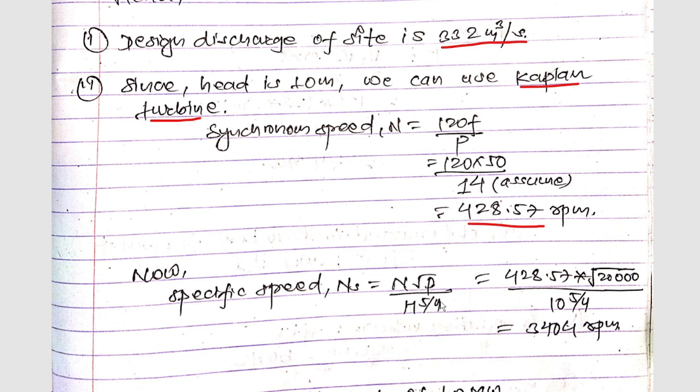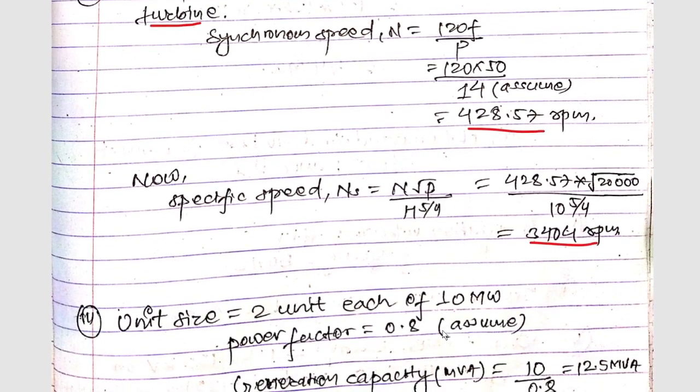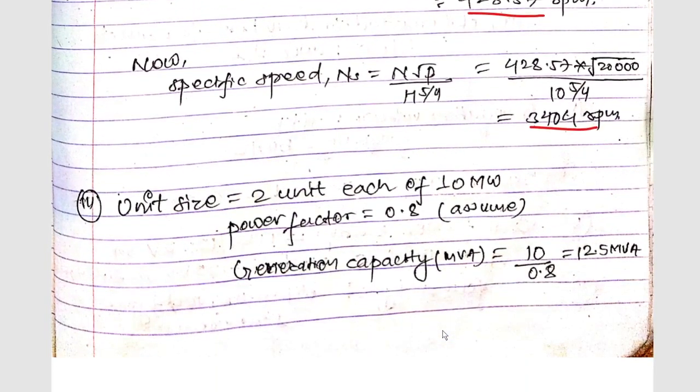The specific speed is Ns = N√P / H^5/4. With N = 428.57 and P = 20,000 kW, we calculate: 428.57 × √20,000 / 10^5/4, giving 340.4 rpm.